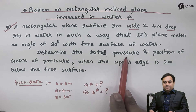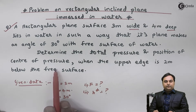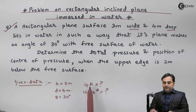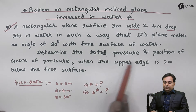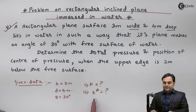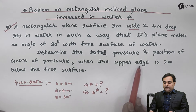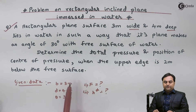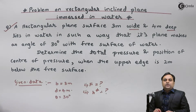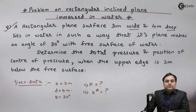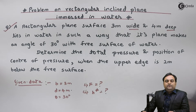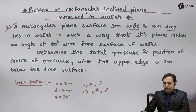We need to determine the total pressure and position of center of pressure. Total pressure means hydrostatic force F, and position of center of pressure is h*. So we have to calculate hydrostatic force and position of center of pressure. Let us start with the solution.